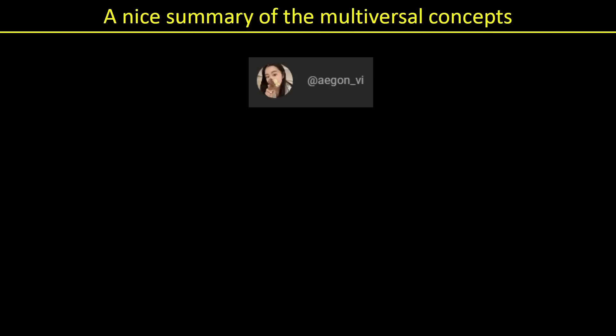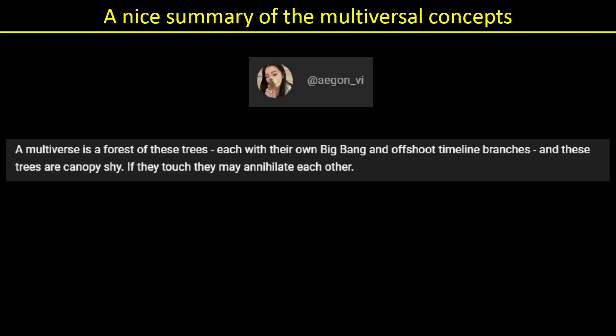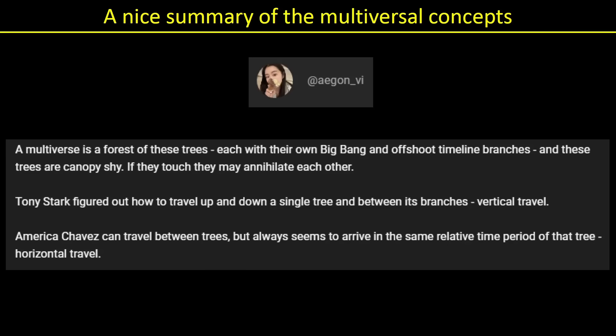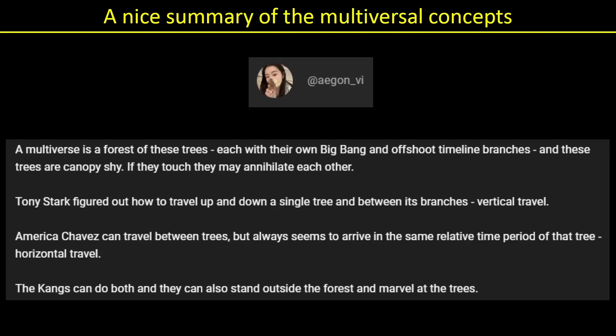A commenter named Egon V left an incredible summary on one of my videos: 'A multiverse is a forest of these trees, each with their own Big Bang (eternal inflation) and offshoot timeline branches (many worlds). These trees are canopy shy — if they touch each other, they may annihilate each other. Tony Stark figured out how to travel up and down a single tree and between its branches — vertical travel. America Chavez can travel between trees, but always arrives at the same relative time period — horizontal travel. The Kangs and the TVA can do both, and can also stand outside the forest and marvel at the trees.' I think that perfectly summarizes everything we've seen since the beginning of the multiverse saga.